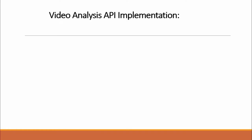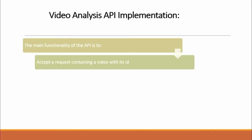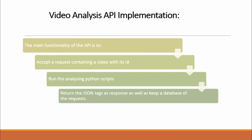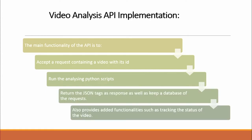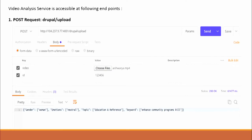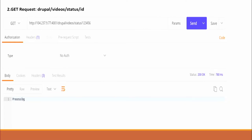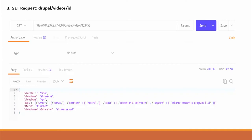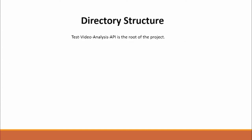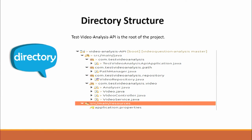The main functionality of our video analysis API is to accept a request containing a video with its ID, run the analyzing Python script, return the JSON tags to the requesting application, and also provide an add-on functionality to track the status of the video. Our video analysis service is accessible at the following endpoints: a POST request to /drupal/upload with key values for video and ID; a GET request to /drupal/video/status/{id} to track status — which can be queued, processing, or finished; and a GET request to /drupal/video/{id} to retrieve all details. This is the directory structure of our project, where the test video analysis API is the root.